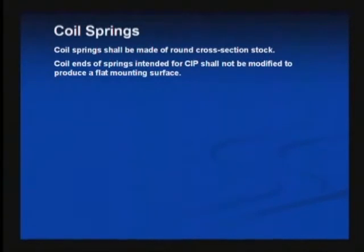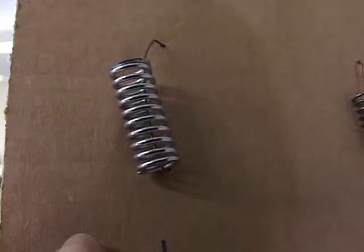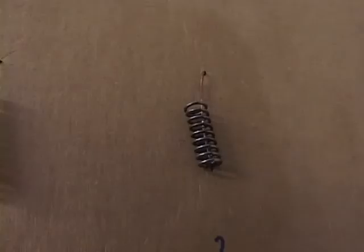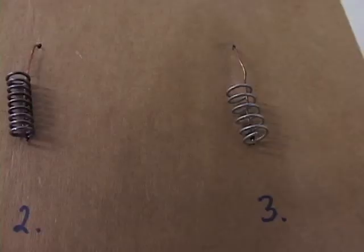The next area is coil springs. The use of springs in the product zone is not recommended. There are quite a few requirements about springs if you have to use them. Here's a sample of a couple of types of coil springs. Numbers one and two are unacceptable — they're unacceptable because they have flattened ends and because they have coils that touch. Number three is the only acceptable spring according to the requirements of 3-A.